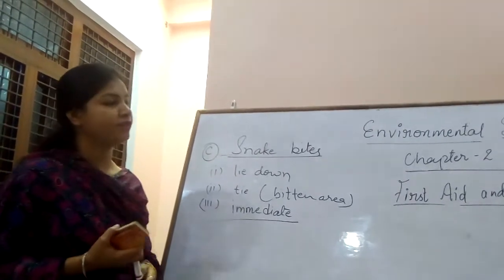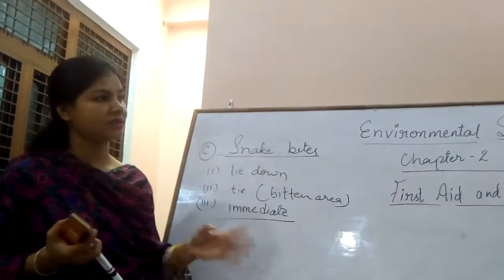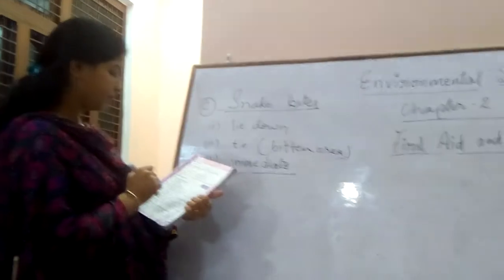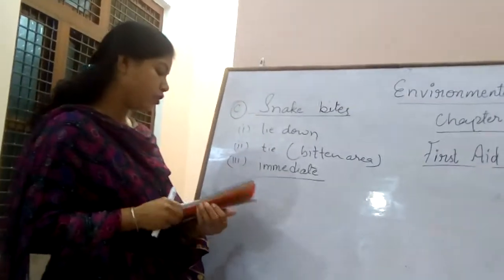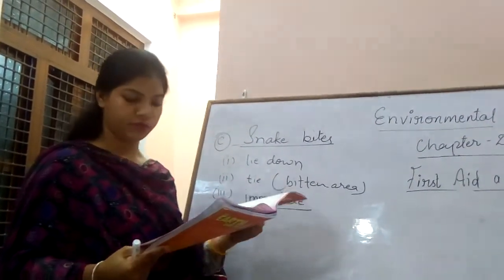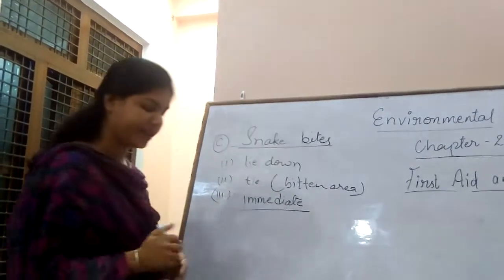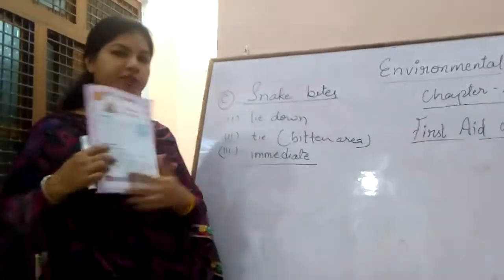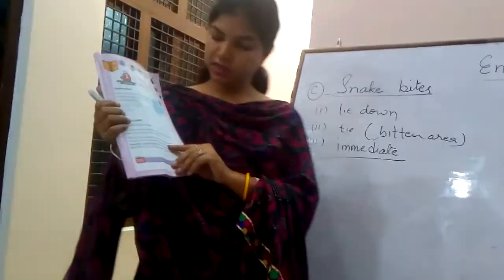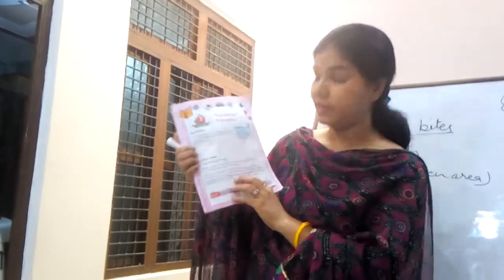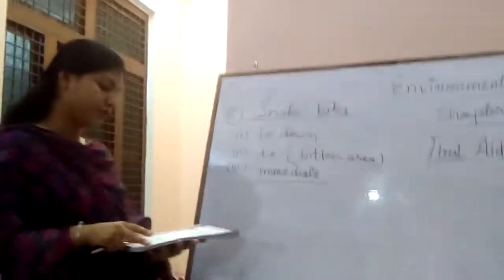Now I'm going to discuss the exercises of this chapter. The first question asks: define first aid. First aid is the immediate help given to an injured person. As it is written here: the immediate medical help given to an injured person is called first aid.